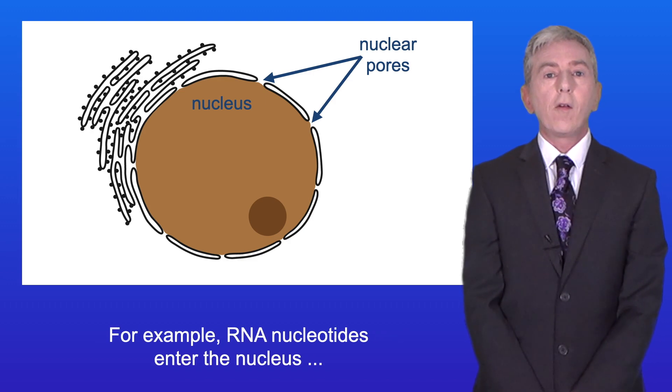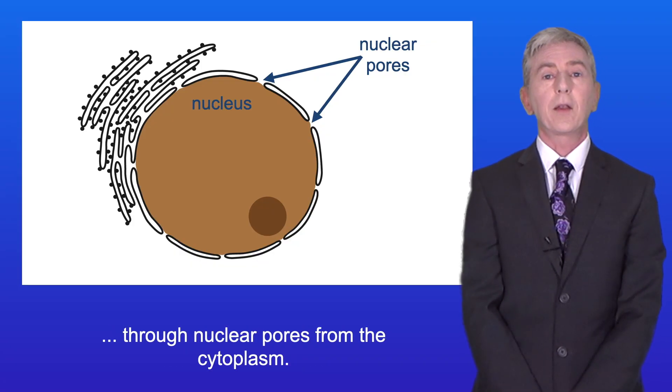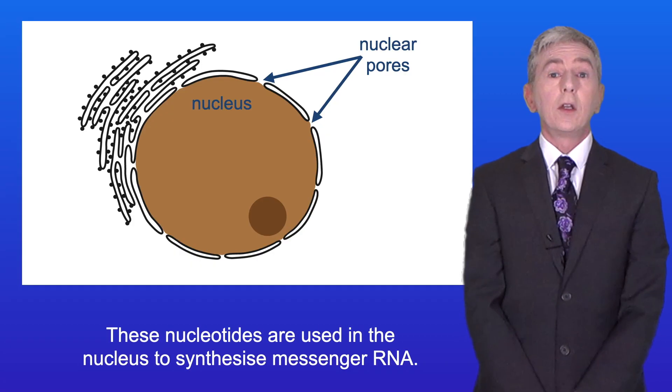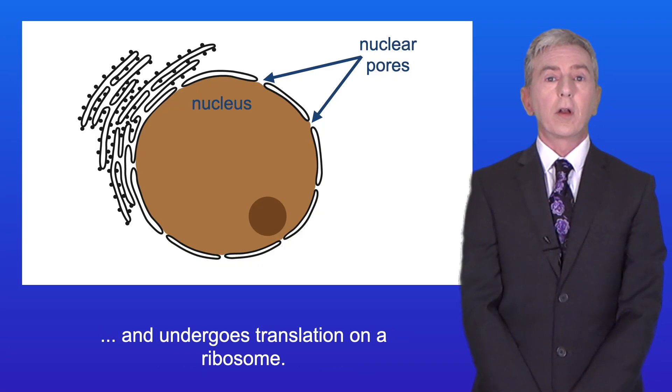For example, RNA nucleotides enter the nucleus through nuclear pores from the cytoplasm and these nucleotides are used in the nucleus to synthesize messenger RNA. The messenger RNA then leaves the nucleus via a nuclear pore and undergoes translation on a ribosome.